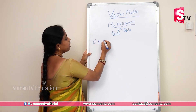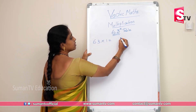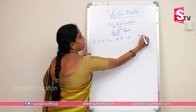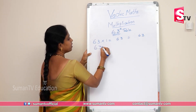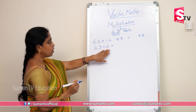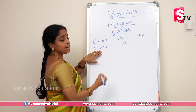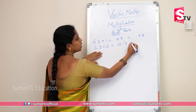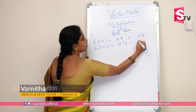63 into 1: 1×3 = 3, 1×6 = 6, so 63. 63 into 2: 2×3 = 6, 2×6 = 12. Units place: write 6, carry 1, so 126.